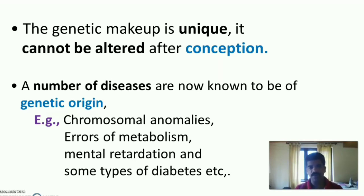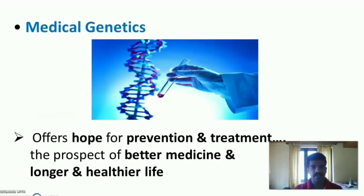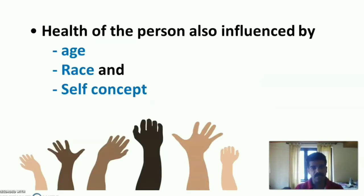A number of diseases are now known to be of genetic origin, such as chromosomal anomalies, errors of metabolism, mental retardation, some types of diabetes, etc. Medical genetics offers hope for prevention and treatment, and the prospect of better medicines and longer, healthier life. The health of a person is also influenced by age, race, and the self-concept of an individual.